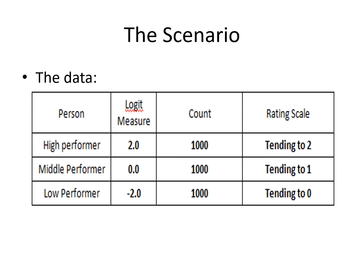Here's the scenario we're going to use — a simple little experiment. We're going to imagine that out of all the people who could have taken our rating scale instrument, we have 1,000 high performers whose logic measure is 2, 1,000 middle performers whose logic measure is 0, and 1,000 low performers whose logic measure is minus 2. Those 1,000 high performers we'd expect to be at 2 or roundabout on the rating scale, but under the Rasch probabilistic model, some of them will actually be observed to give a rating of 1, and some of 0.